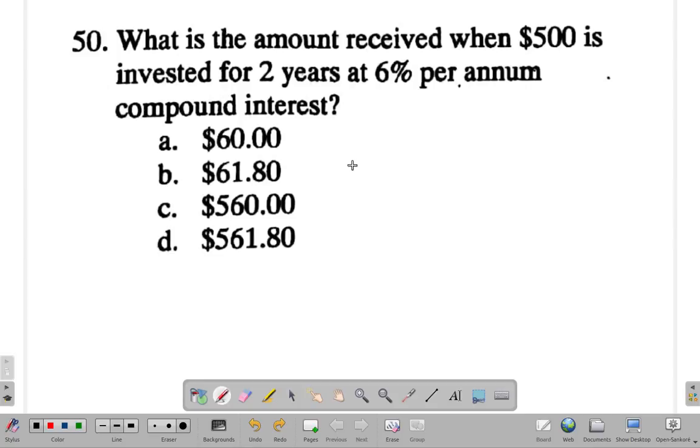Now, the amount received. First of all, 6% per annum for two years. You can work it out. I mean, work out all the figures. You probably will have to work out the figures because these two are kind of close and these two are kind of close as well.